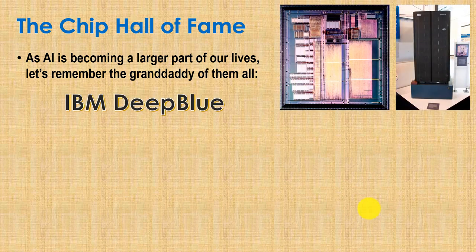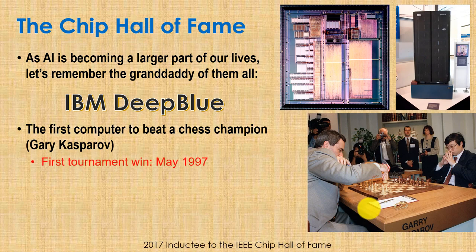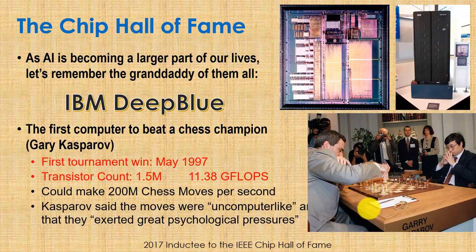Today's chip hall of fame entry is Deep Blue, highly relevant as AI becomes a larger part of our lives. Deep Blue was the first computer to beat a reigning chess champion, defeating Garry Kasparov in May 1997. The main chip had 1.5 million transistors providing 11.38 giga floating-point operations per second, enabling 200 million chess moves per second. Kasparov said the moves were 'uncomputer-like' and exerted great psychological pressure. Deep Blue was inducted into the IEEE Chip Hall of Fame in 2017.